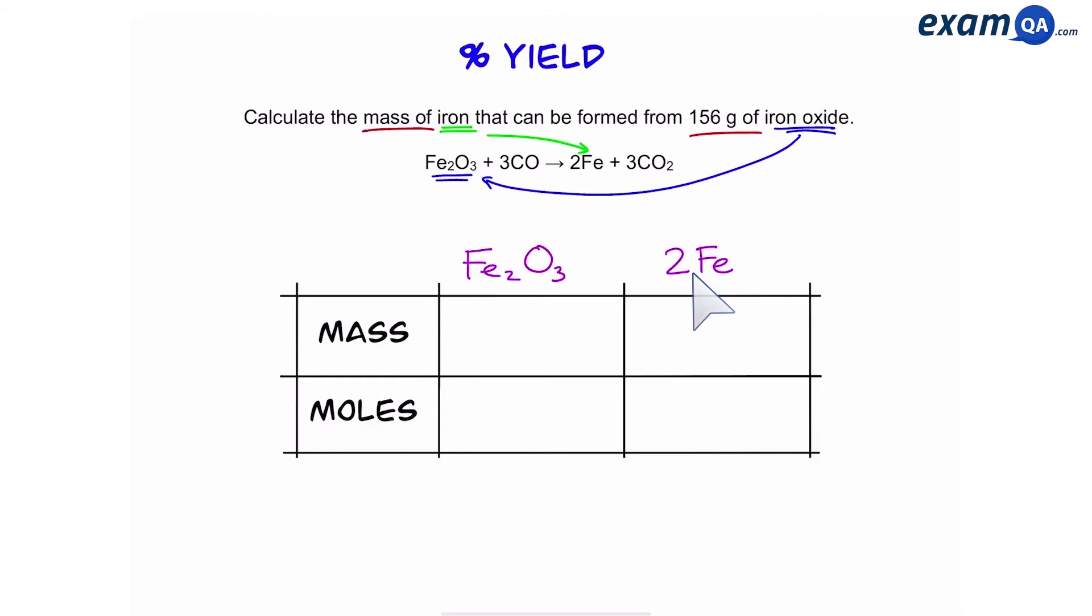It doesn't matter which way you write them, by the way. So then we're going to write down the mass of what we already know. We already know that we have 156 grams of iron oxide, but we don't know the mass of iron. First, let's convert that into moles by dividing by the relative formula mass. Using the periodic table, the mass of iron is 56 and oxygen is 16.